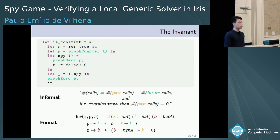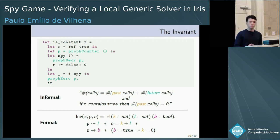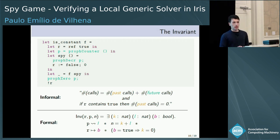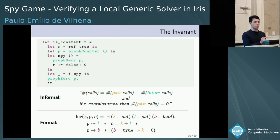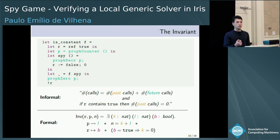Now we can translate the informal invariant into a formal one that can be written in Iris. The first line — that the number of times spy is called equals past calls plus future calls — gets translated to: the state of the prophecy counter is L, meaning it will be called L times in the future, and the total number n equals past calls k plus L. The assertion 'if r contains true, then past calls is zero' gets translated to: the state of the reference is b such that if b is true, then k is zero.